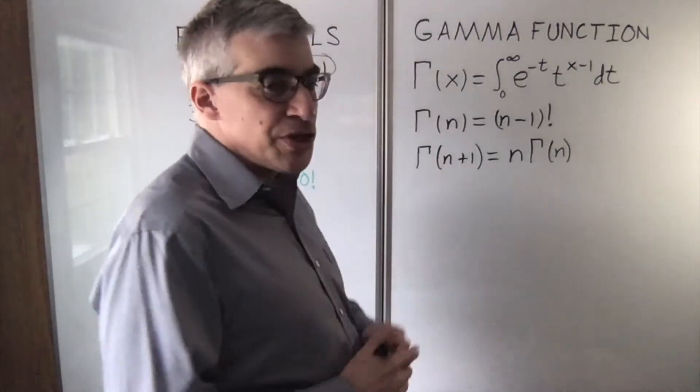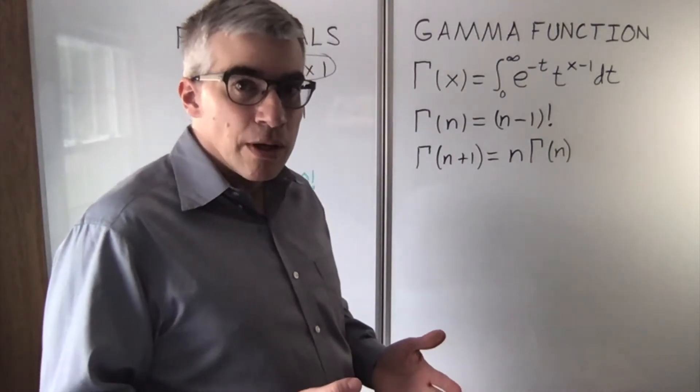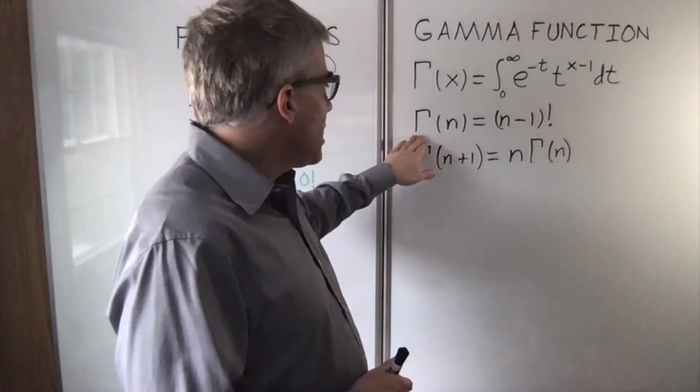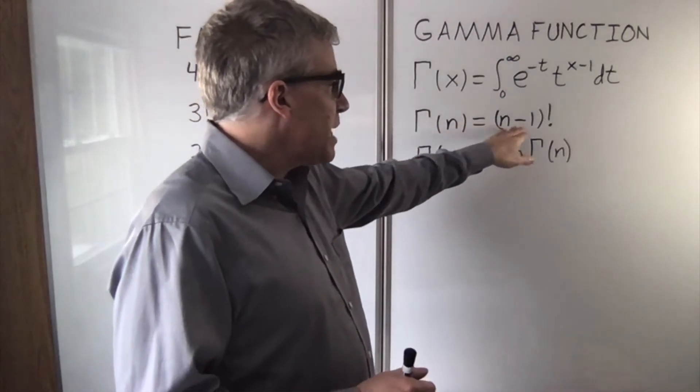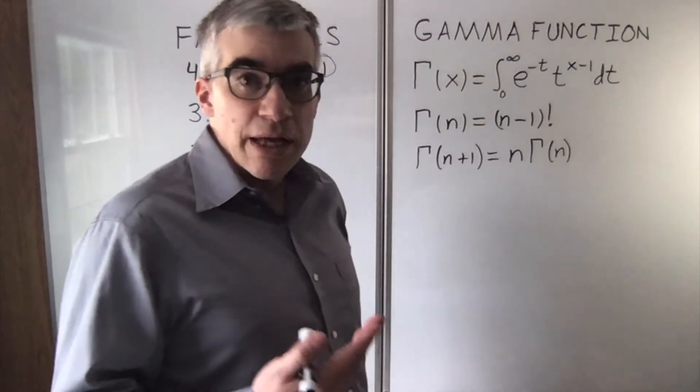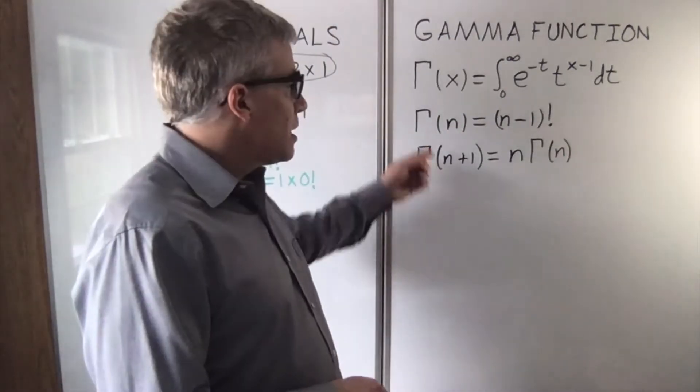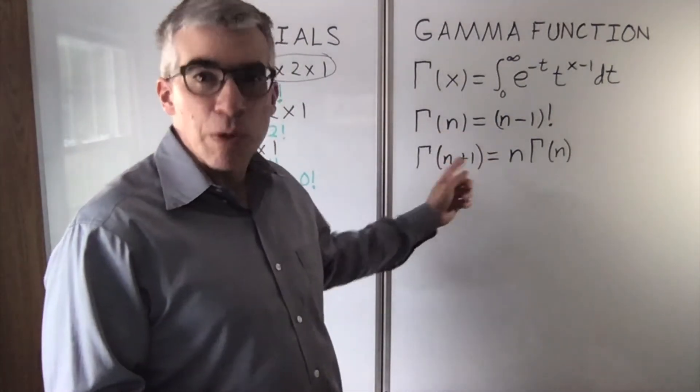The gamma function is an extension of factorial. It's defined as an integral, and gamma of n turns out to be n minus 1 factorial when n is a positive integer. I don't know why it's off by 1, but watch out for that.